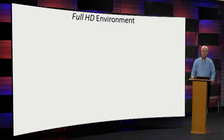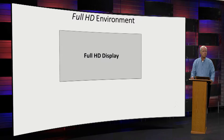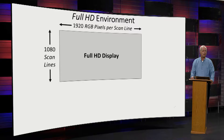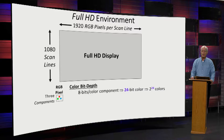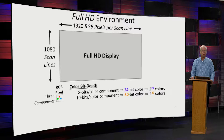Let's do a quick review of what a full HD environment is. A full HD display will have 1080 scan lines, and each scan line will have 1920 RGB pixels. A pixel has three components: red, green, and blue — additive color. Each component is described by a set of bits. If there are 8 bits per component, that's 24 bits total, giving 2 to the 24 possible color variations. At 10 bits per component, you have 30 bits per pixel and 2 to the 30 different colors.